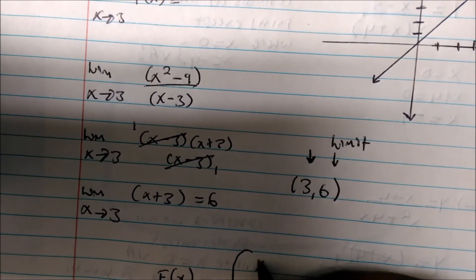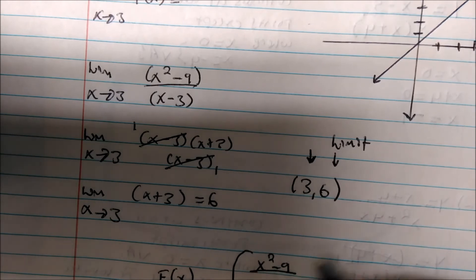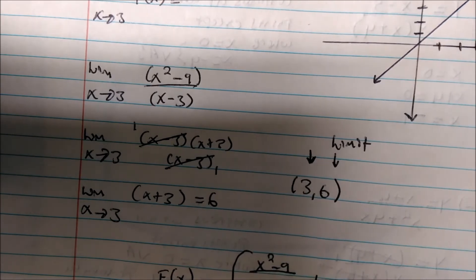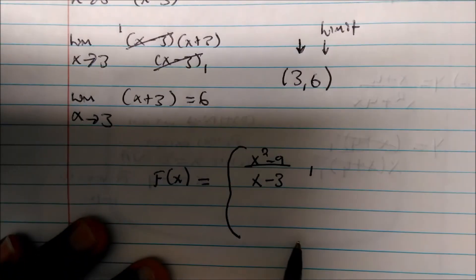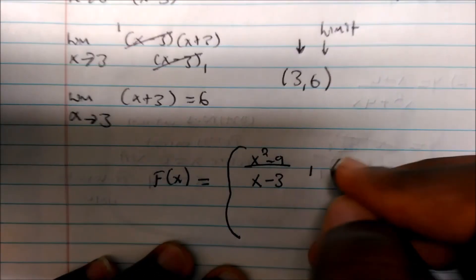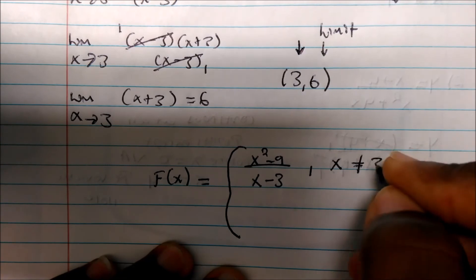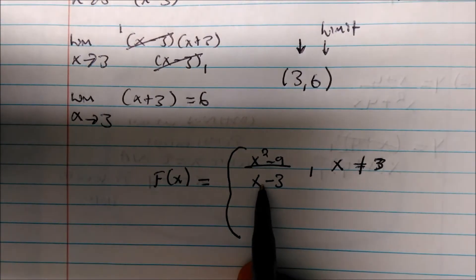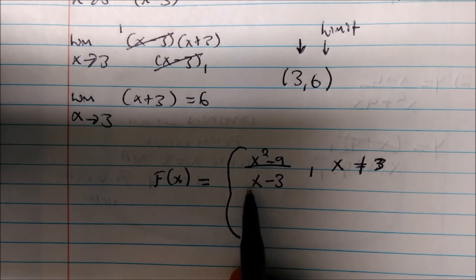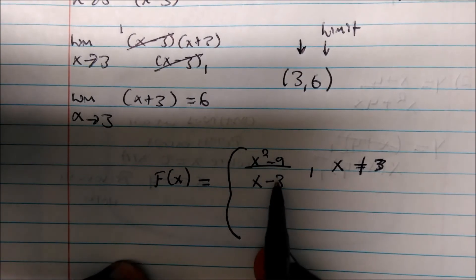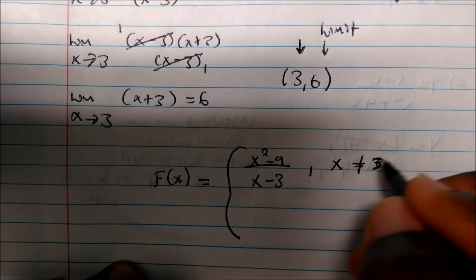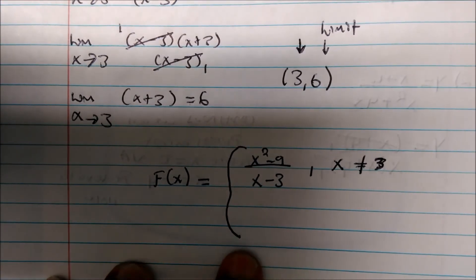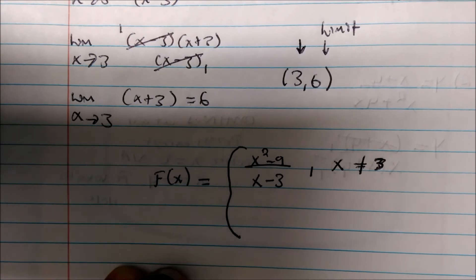The function (x squared minus 9) divided by (x minus 3), where x cannot equal 3. Because remember if we plug 3 in here we get zero over zero, but definitely we have a zero in the denominator. So this is where x cannot be 3. Now here's how we're gonna make it continuous at x equals 3.